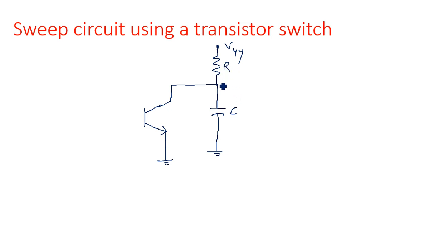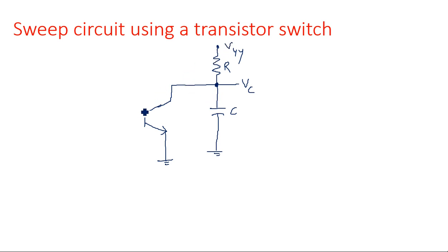The main purpose of this sweep circuit is to generate a sawtooth waveform. In order to generate the sawtooth waveform, there should be some charging and discharging action performed. The charging and discharging action is done through the capacitor only. From here we are having the output voltage V0, or VC, voltage across the capacitor, and at the input of this transistor we will be giving a rectangular waveform.